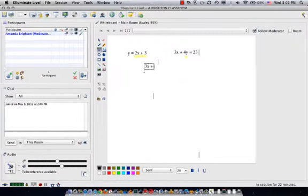So we write 3x plus 4, and this time, instead of writing y, we write 2x plus 3. And it's important to keep those in parentheses, because that entire thing is multiplied by 4. So when we distribute, we get 8x plus 12 equals 23.